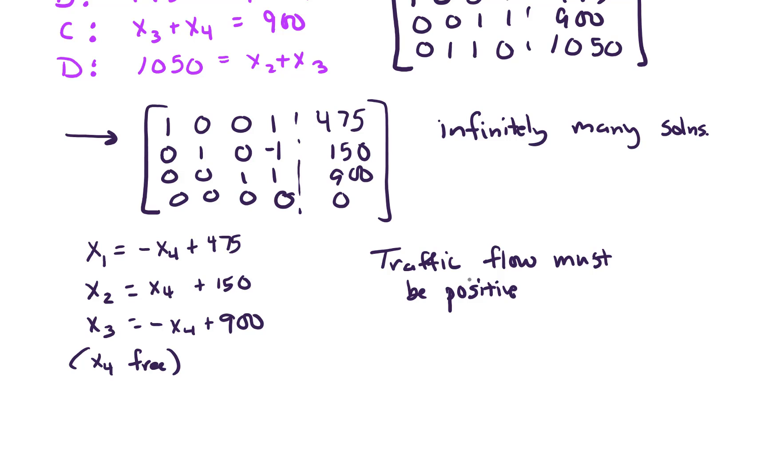And so to figure out the minimal flow along X3, we have to figure out what's the maximum that X4 could be, so that we don't get negative flow. So what is the maximum of X4? Because if we maximize X4, that leads to a minimum on X3. And that's happening right here because of this last equation.